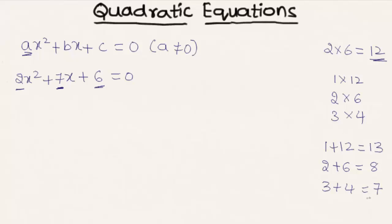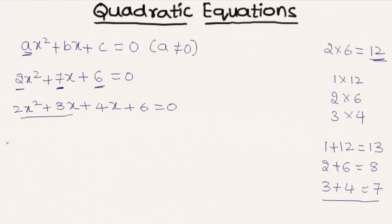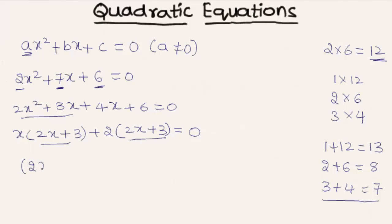So we can rewrite the expression as 2x² + 3x + 4x + 6 = 0. Taking x as a common factor from the first two terms gives x(2x + 3), and taking 2 as a common factor from the remaining two terms gives 2(2x + 3) = 0. Taking (2x + 3) as a common factor, we get (2x + 3)(x + 2) = 0.